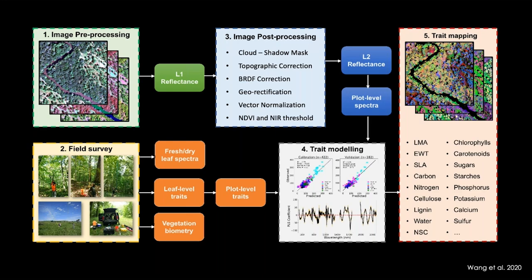Hyperspectral imagery from airborne sensors requires quite a bit of pre-processing: atmospheric corrections to produce surface reflectance, corrections for clouds and shadows, topographic corrections so different illuminated slopes have similar reflectances, and BRDF corrections for differences due to changing sun direction and exposure. In addition, we have to collect data in the field related to traits, scale them up to pixel size, and then build models to predict all of these different traits—such as LMA, nitrogen, cellulose, lignin, non-structural carbohydrates, and phenolics.